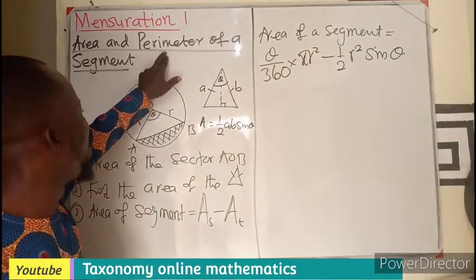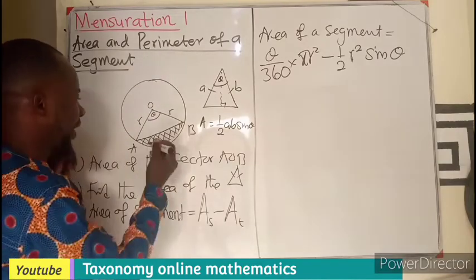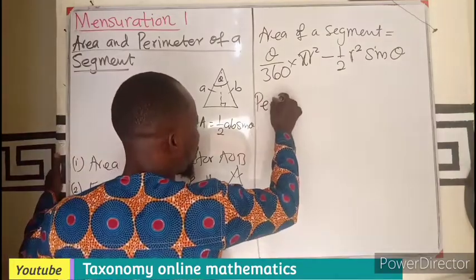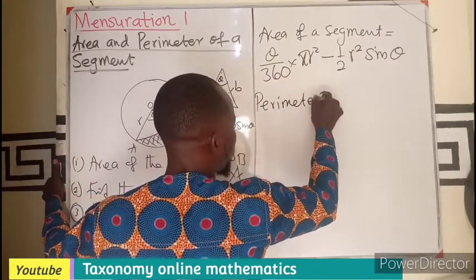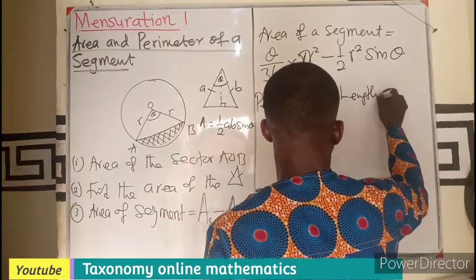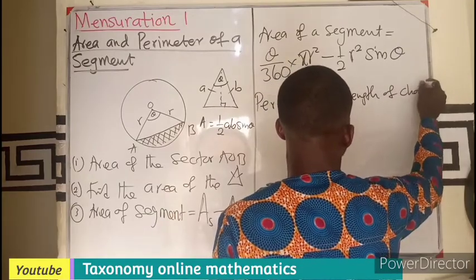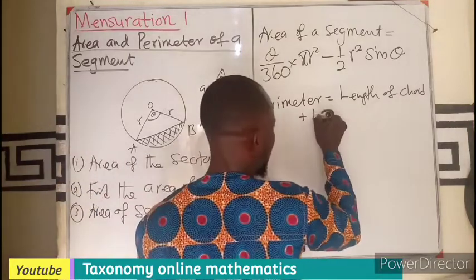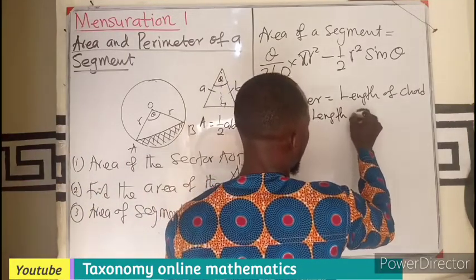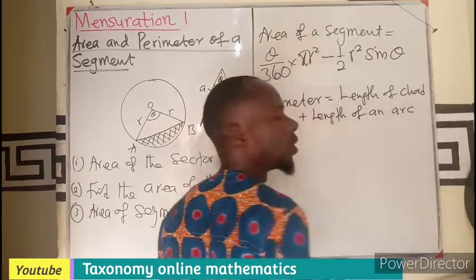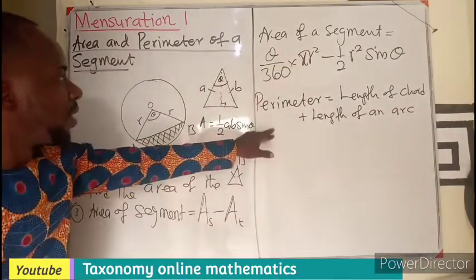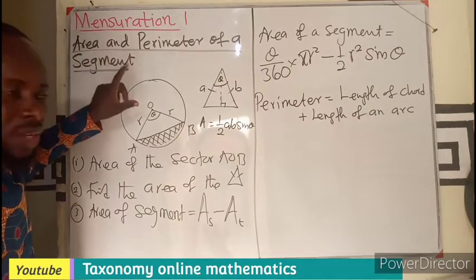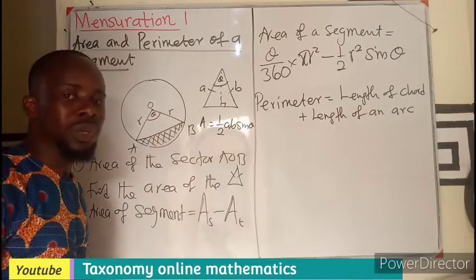All right. Then, to find the perimeter, don't forget, you are looking for the length of the chord. So, perimeter equals to length of chord plus length of arc. So, these are the two formulas that will be used under this topic. Let's take a question to see how we can put them into use.